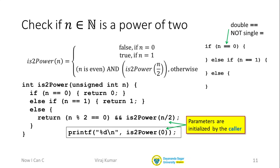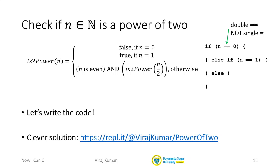With that point made, I also want to highlight that there is a clever solution to computing powers of 2. This uses some advanced operators in C which we won't have time to discuss, but at the link provided you can look at the code, and I've also given another URL where some of these operators are defined. If you're interested, feel free to take a look.